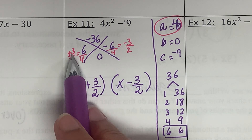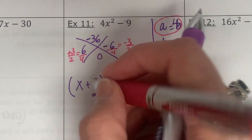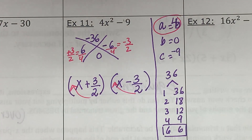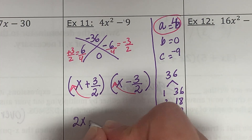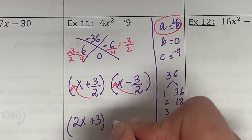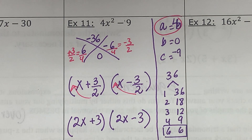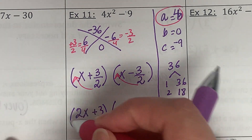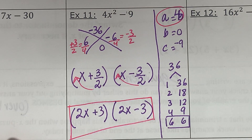This one is positive and that one is negative. Since I have fractions, I have to swing them. So the final answer is 2x plus 3 and 2x minus 3.